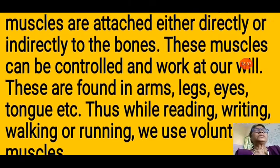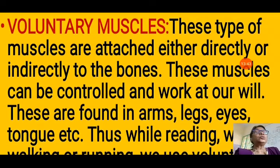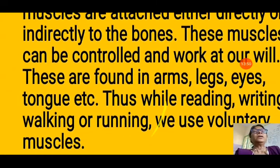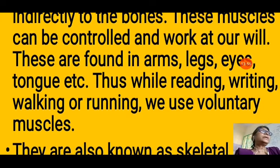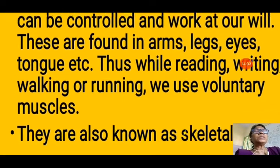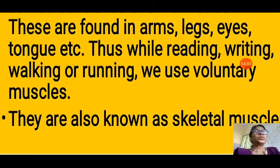Voluntary muscles are attached either directly or indirectly to the bones — that is, they are skeletal muscles. These muscles can be controlled and work at our will. They are found in our arms, legs, eyes, and tongue. We can move our tongue, arms, and legs according to our wish. While reading, writing, walking, or running, we use voluntary muscles. They are also known as skeletal muscles because they are attached to the skeleton.